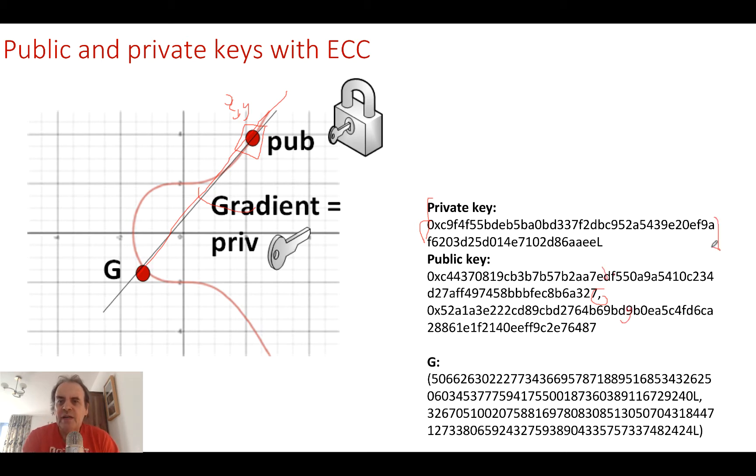The private key is just a scalar value. The equation that we have is that the public key, we'll call it Q, is equal to the private key times G. It's extremely difficult if we use large integers to find the value of P even though we have the value of Q and G. We use certain standard curves that are seen to be safe.